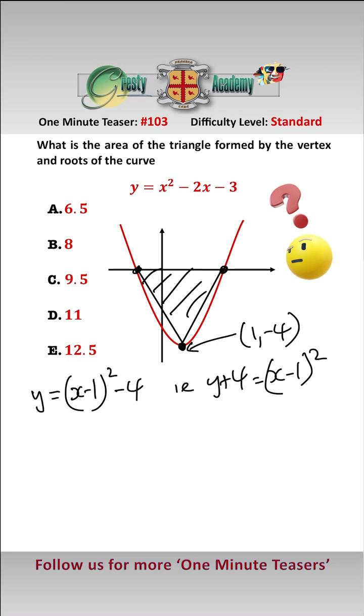To find the roots what we need to do is factorize x squared minus 2x minus 3 equals 0, i.e. x minus 3 times x plus 1 equals 0, so x equals 3 or x equals minus 1.